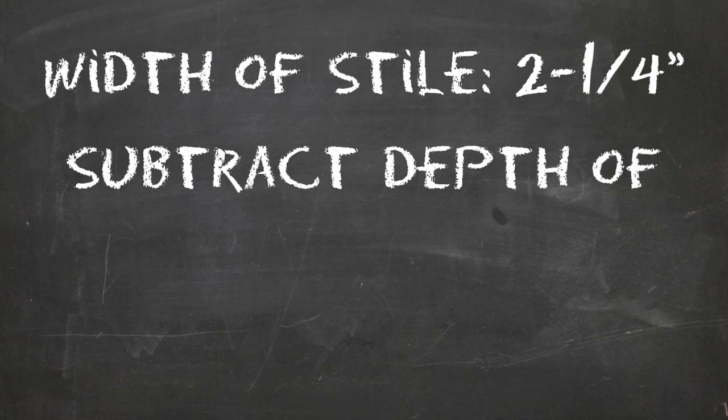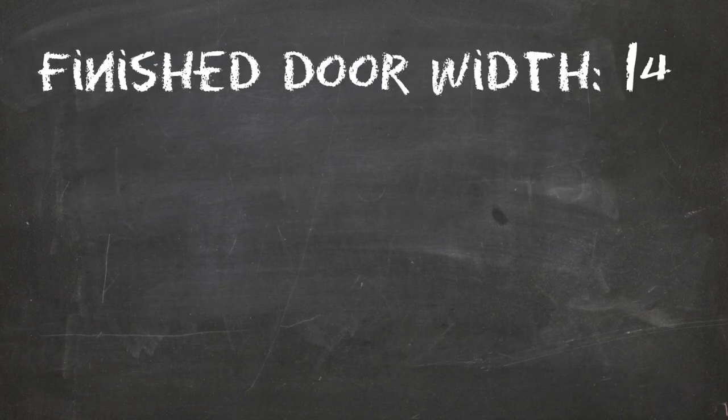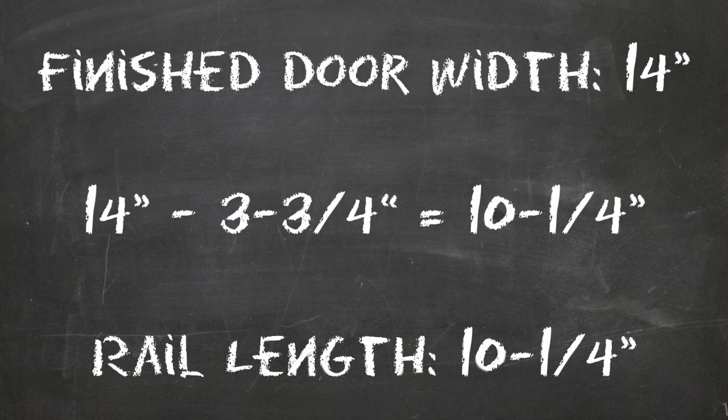There are two ways to figure the rail length required. One method uses math and requires the following calculations. Take the finished door width of 14 inches and subtract 3 3/4 inches to find a rail length of 10 1/4 inches. You may want to cut cathedral or arched rails 1 inch longer if you wish to attach a template to them with screws.